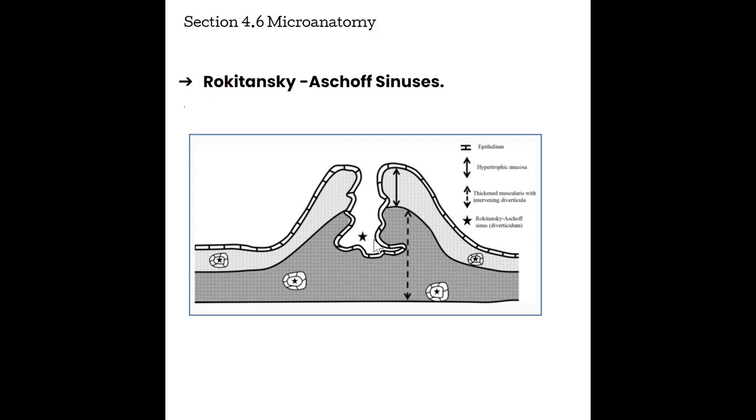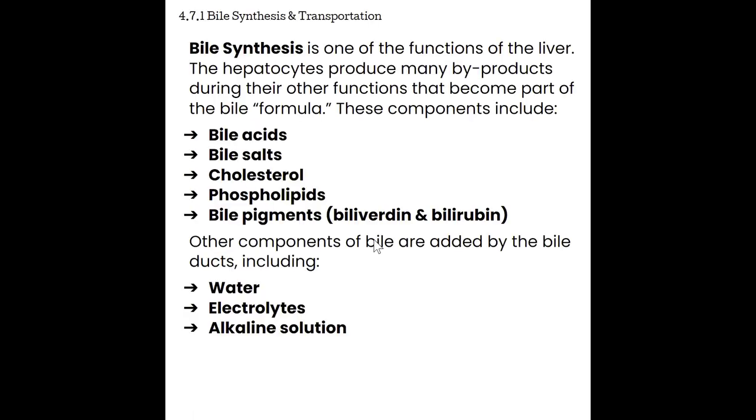Section 4.7, biliary physiology. The physiology of the biliary tree is relatively simple for ultrasound purposes. We need to understand what bile does, how it flows, what causes it to flow, how it relates to keeping our patient NPO, and what happens post-cholecystectomy. The liver's hepatocytes produce byproducts that become part of the bile formula, including bile acids, bile salts, cholesterol, phospholipids, and bile pigments such as biliverdin and bilirubin — a product of hemolysis.